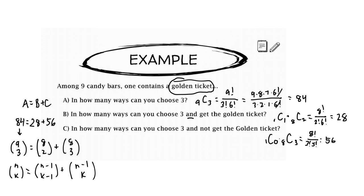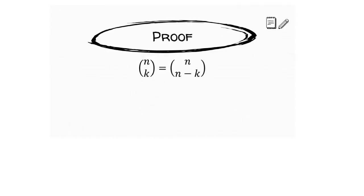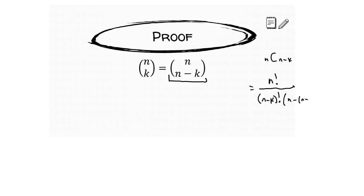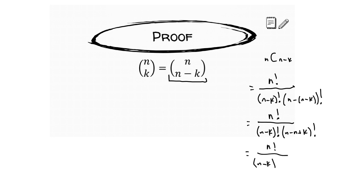Let's finish with one more proof — simple but important. To show algebraically why N choose K equals N choose N minus K, we start on the more complicated side. Rewriting N choose N minus K using the combination formula gives N factorial over N minus K factorial times N minus (N minus K) factorial. Simplifying the exponent in the second factorial — N minus N plus K — the N's cancel, leaving K factorial, and we end up with the formula for N choose K.